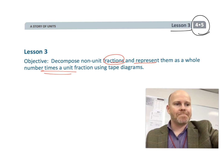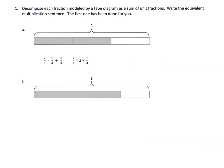Let's get started. The instruction says: decompose each fraction modeled by the tape diagram as a sum of unit fractions, and then turn it into multiplication. In our first example, we have a fraction that's clearly two-thirds, because the whole has been chopped up into three equal-sized pieces. Our sum of unit fractions is one-third plus one-third, and since we have two of them, that could be two times one-third.